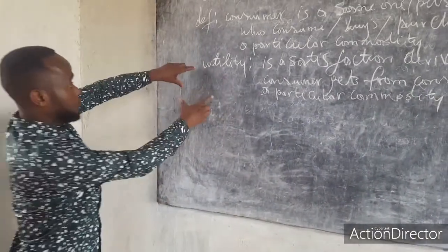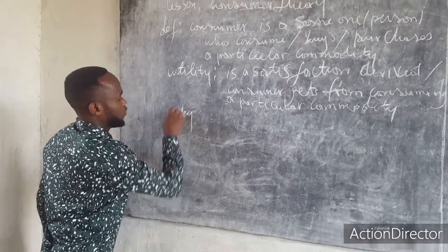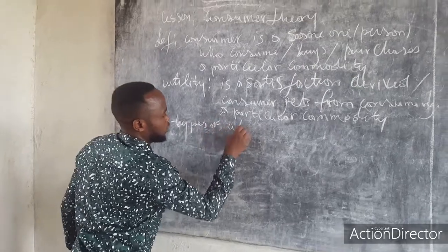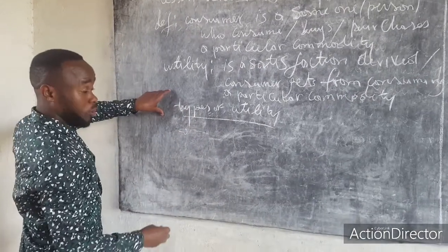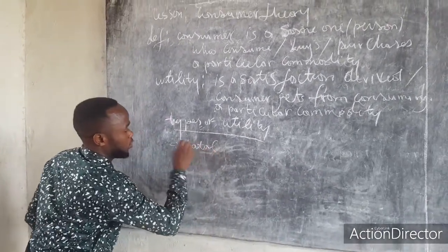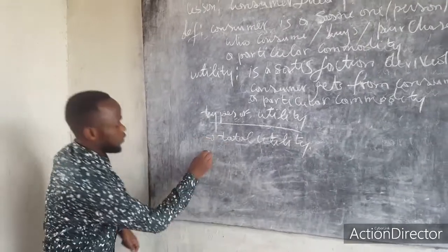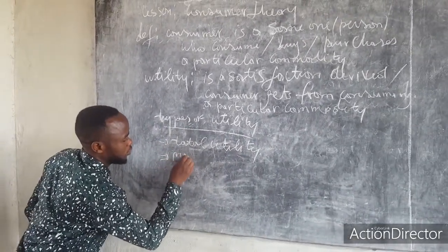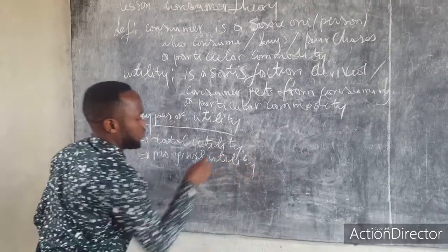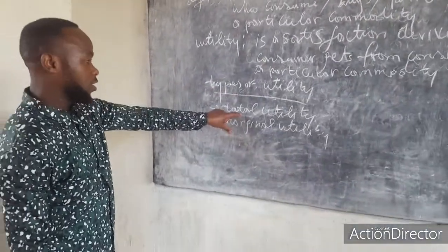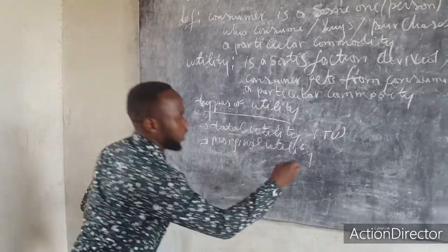After understanding utility, we note that utility has two types. The first type is total utility, abbreviated as TU. The second type is marginal utility, abbreviated as MU. We will explain each one by one.